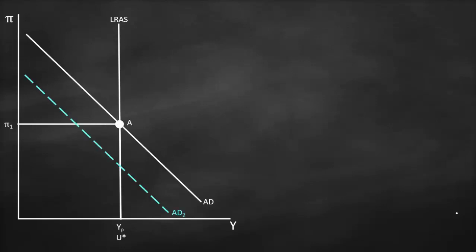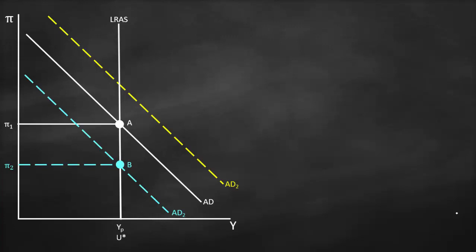If we have a downward aggregate demand shift — meaning a negative aggregate demand shock — aggregate demand will shift to the left. Therefore, we'll have a new equilibrium point between aggregate demand 2 and the long-run aggregate supply. At this point we have inflation 2. We can see that inflation changes but output is the same, which means our natural rate of unemployment, or NAIRU, is the same. If we have a positive aggregate demand shock, for example aggregate demand shifts to the right, we'll have a new point of equilibrium between aggregate demand 2 and long-run aggregate supply, which we can call point 3.